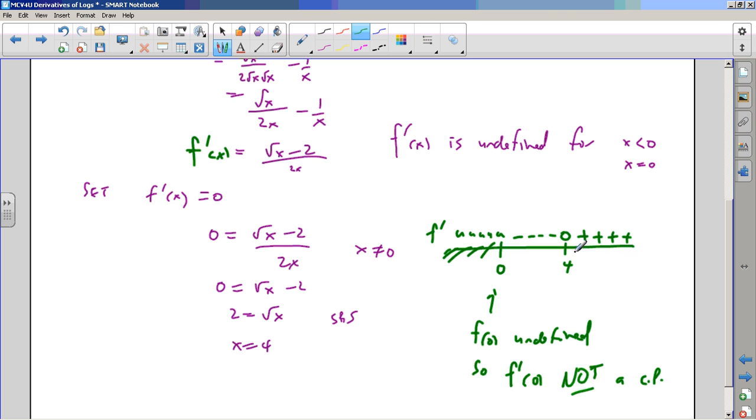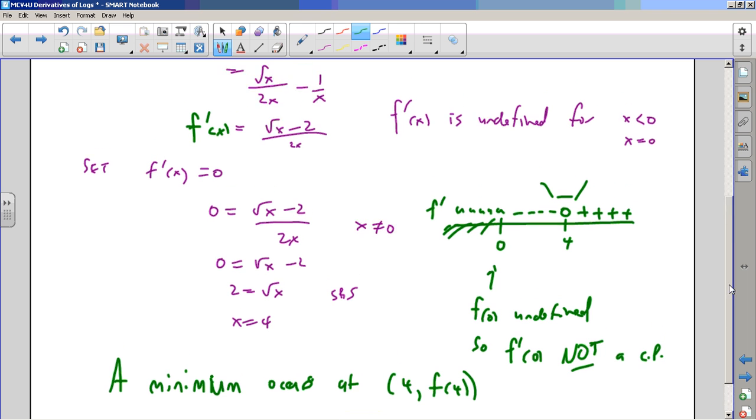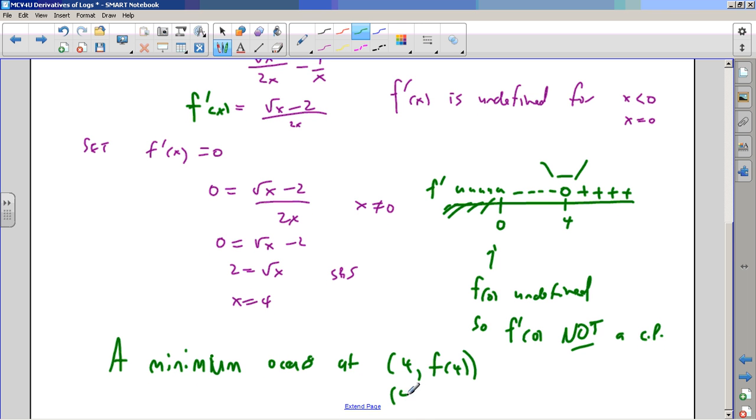All right. So what's this critical point? Well, I've got the function is decreasing, 0 and increasing. It's a minimum, right? So a minimum occurs at 4 and then f at 4. f at 4 is some awful thing, right? Because f at x was the square root of 4 minus the ln of 4. Which, this is 2, but this is crazy. So whatever that value is.